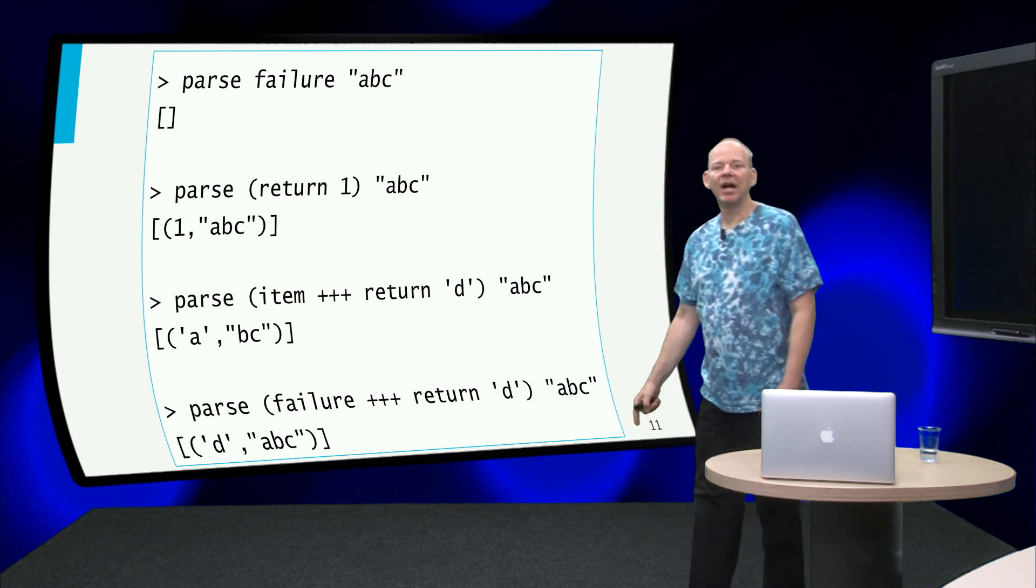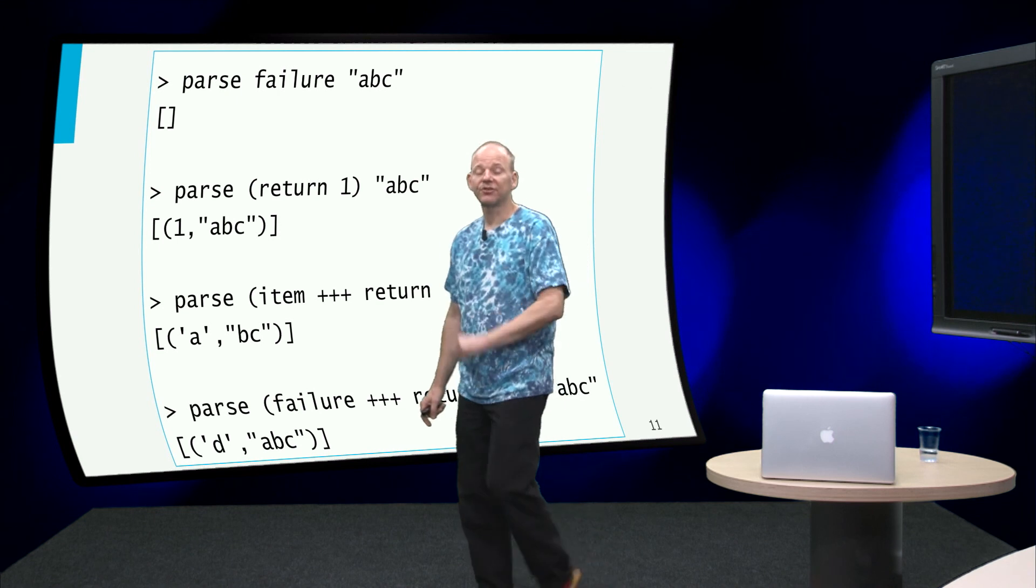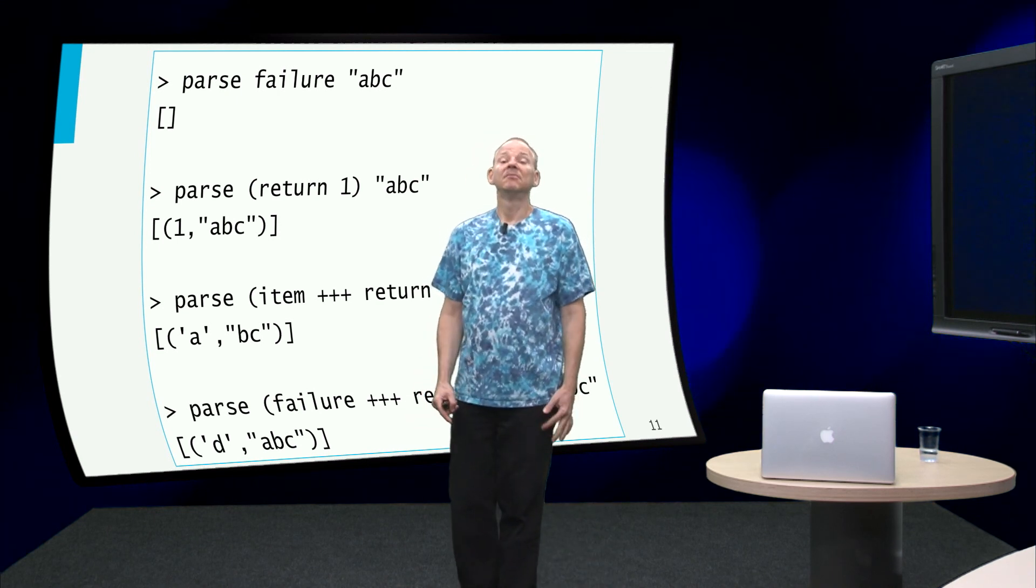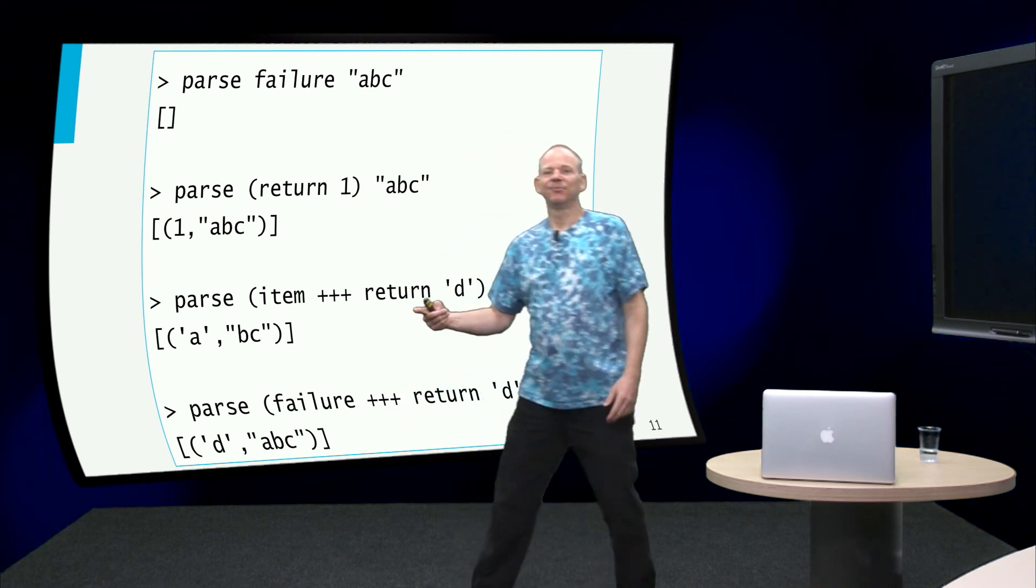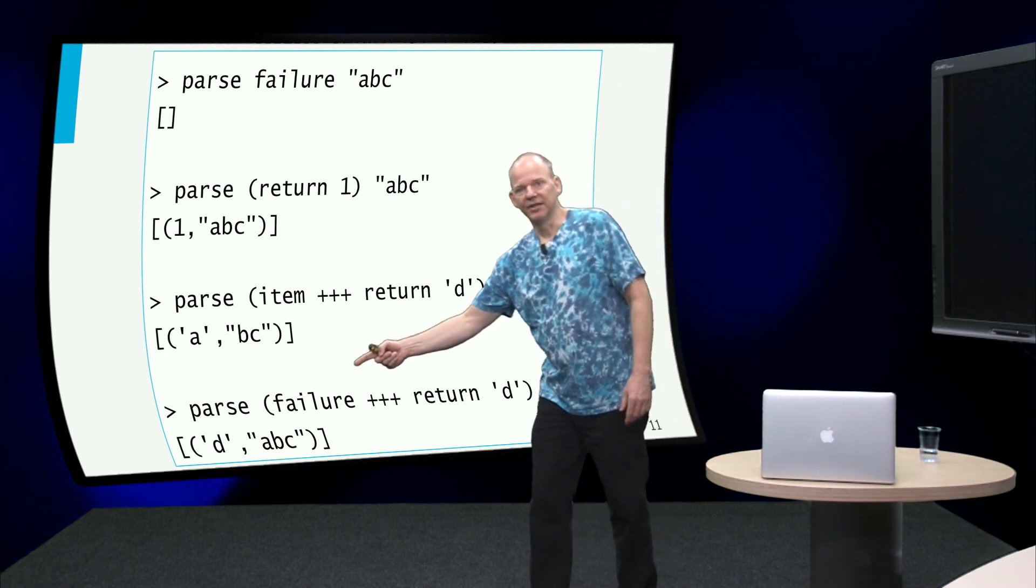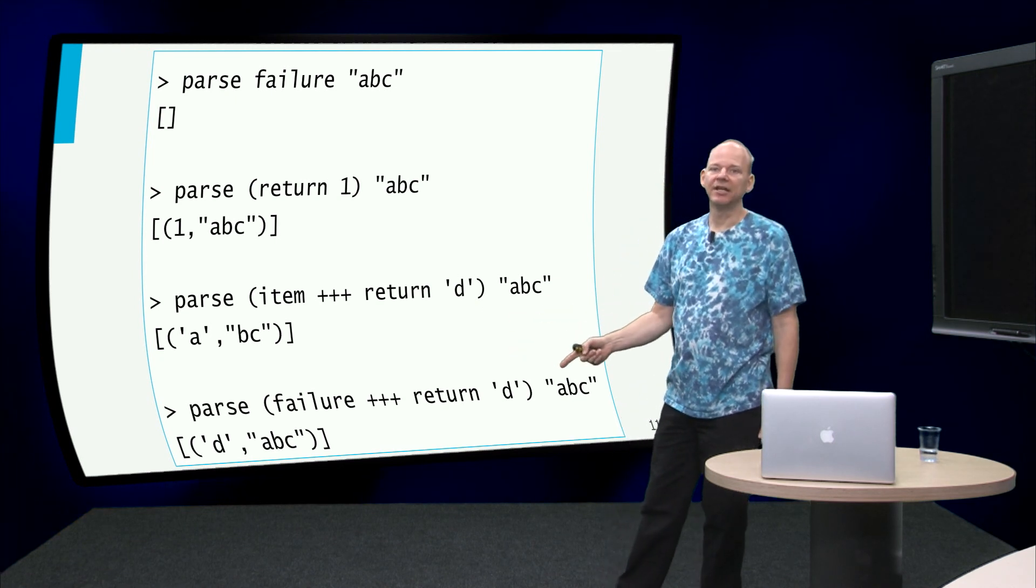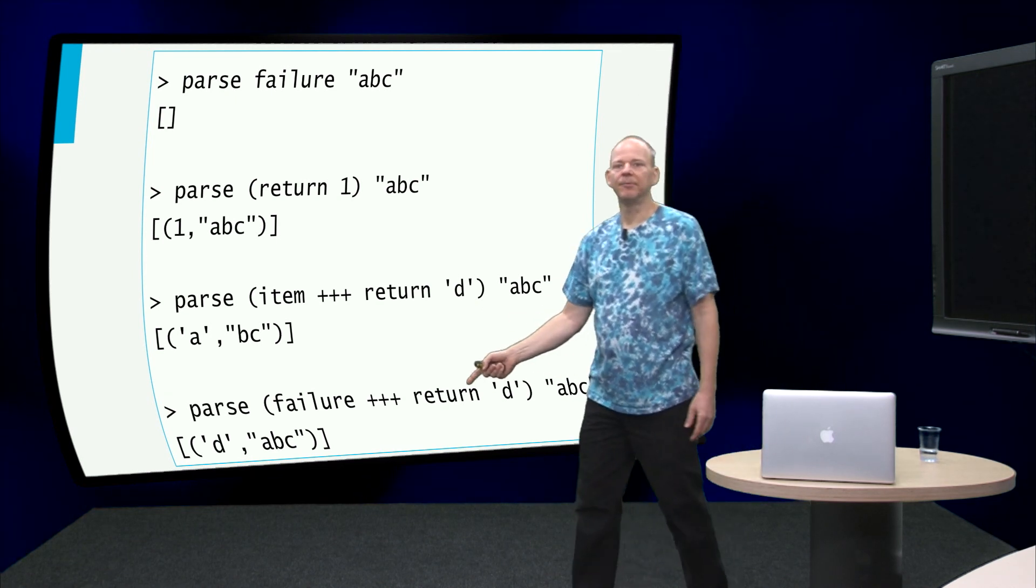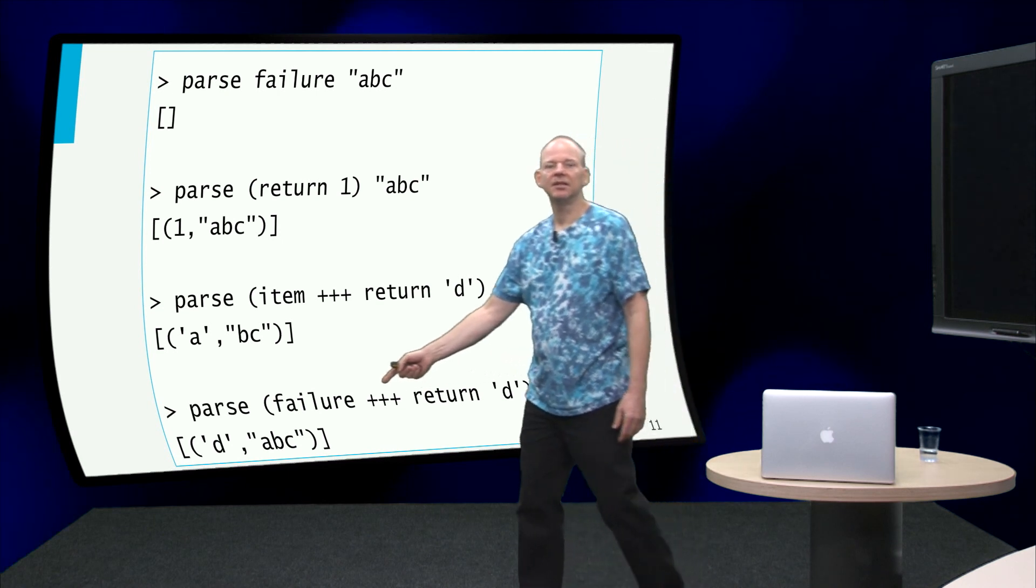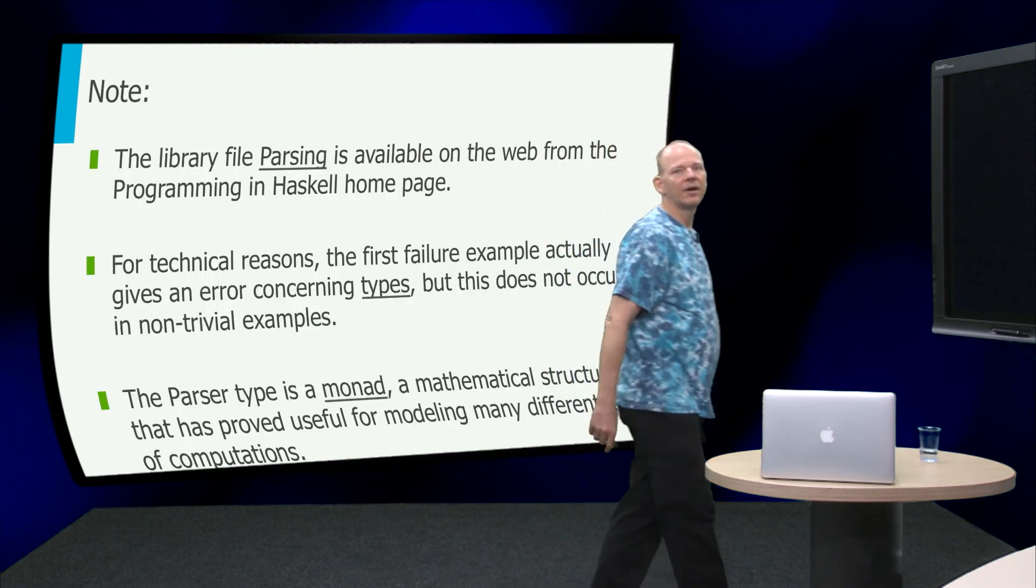And now the last example here, is we try the parser that always fails, and if it fails, we will try the parser that always succeeds. Well, this will fail, this will succeed, and it will succeed by not consuming any input but just returning d and that's exactly what GHCI will verify for us.